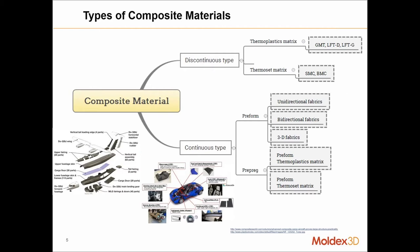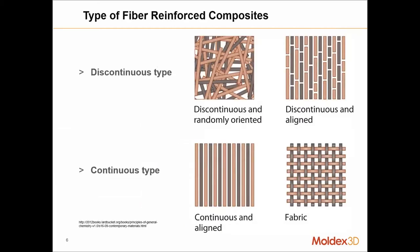Typically there are two types of composite materials: discontinuous and continuous. The discontinuous type is used in thermoplastics like injection molding or compression molding of thermoplastics. We have GMT and LFT for thermoplastics, and SMC and DMC for thermosets. The continuous type is like a preform or mat consisting of 3D fabric and different unidirectional fabrics for pre-preg or preforms.